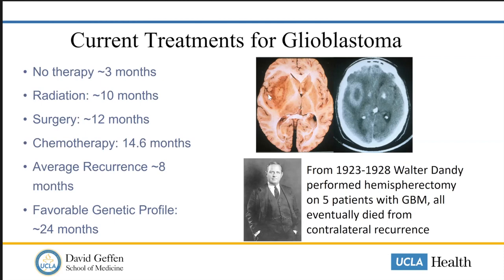As we get more understanding of the genetic factors that go into these tumors, favorable genetic profiles like IDH mutation or MGMT methylation can tip the balance and make median survivals in those patients a little bit longer. But we're still talking about just a couple of years.